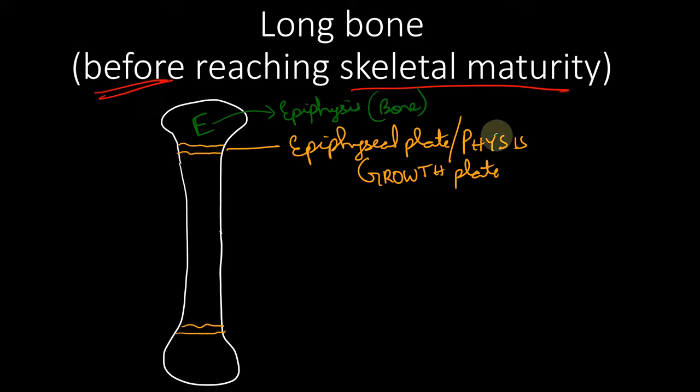It is bone itself, but the epiphyseal plate, in contrast, is not bone—it is hyaline cartilage. This is very important. Though both have the word 'epiphyse' in them, epiphysis is bone and epiphyseal plate is cartilage.